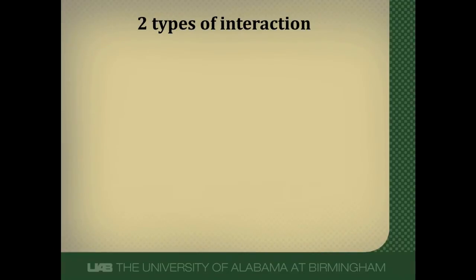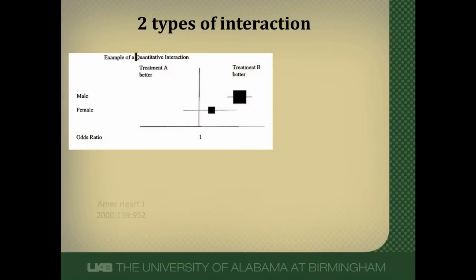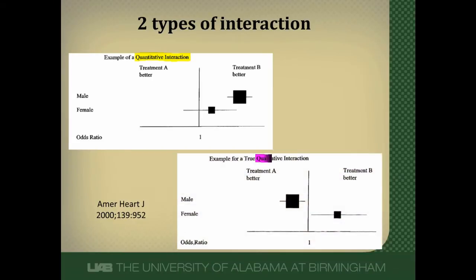Now there are two types of interaction. There's a quantitative interaction, in which case the direction of the subgroup effect is the same in both groups but is modified quantitatively between the two — it's in the same direction. This is the most common type of interaction.